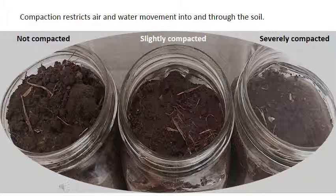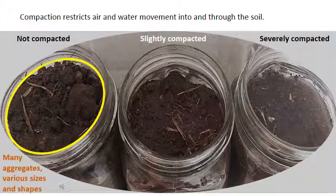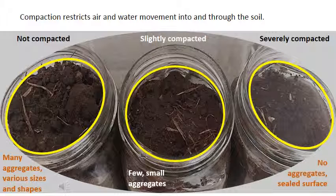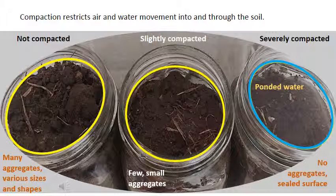This is the top view of those same soils. There are many aggregates of various shapes and sizes in the non-compacted soil. A few small aggregates are visible in the slightly compacted soil, though it is obvious that compaction flattened the surface. No aggregates are visible in the severely compacted soil, and the surface is sealed, resulting in water ponding on the surface.